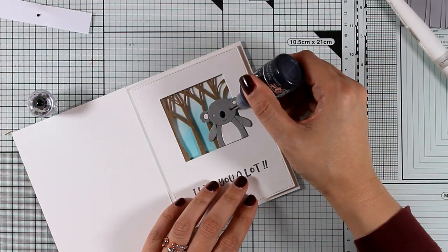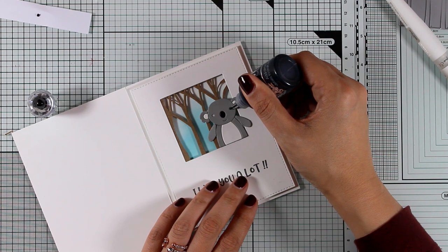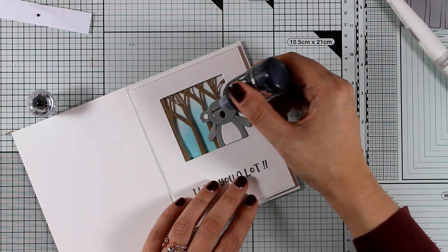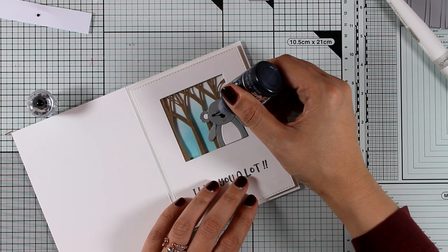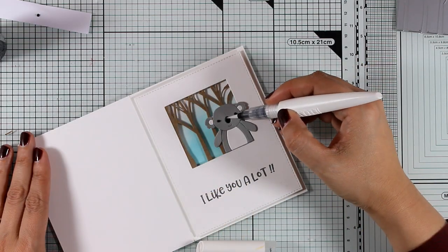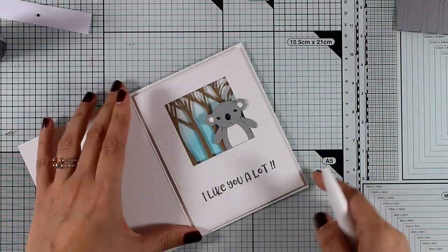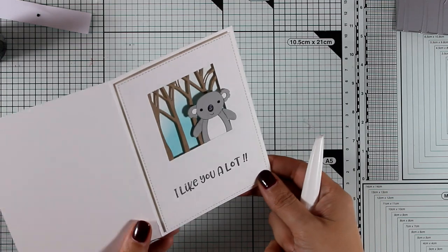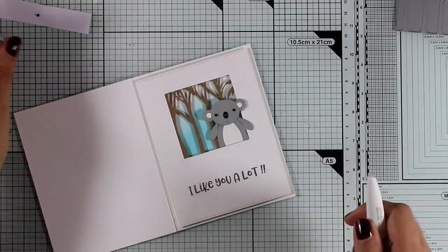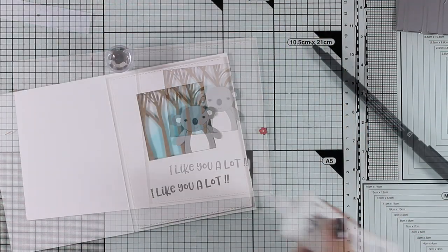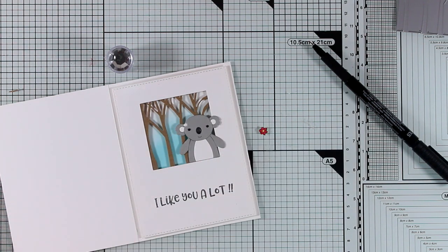So first of all, I need to add some eyes, for that I'm using my black Nuvo drops. Then I'm going to use my glitter pen and add some shine on the nose, just for some extra sparkle on my card.